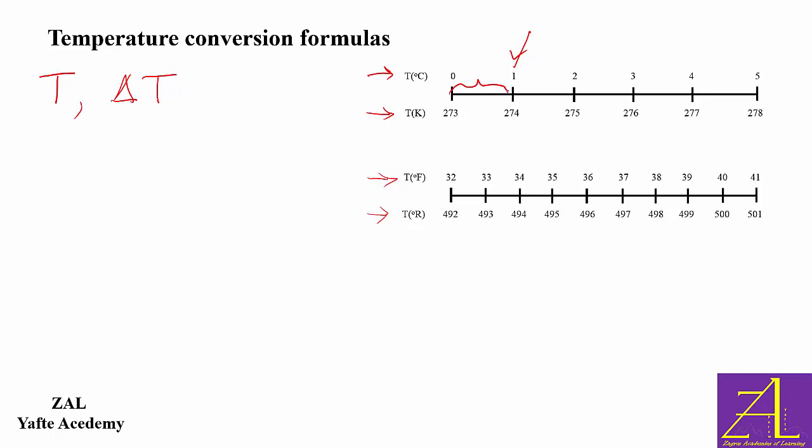So between 0 and 100 degrees C, there are 100 degrees, and between 32 and 212 on the Fahrenheit scale, there are 180 degrees.